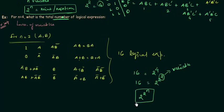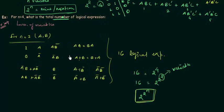This is a very important formula to remember. You can directly find the number of logical expressions for any number of variables using 2 to the power 2 to the power n, because when variables increase it becomes impossible to manually list all possibilities.